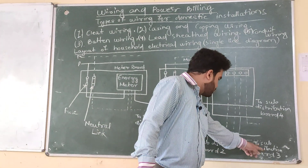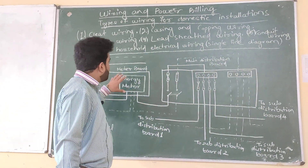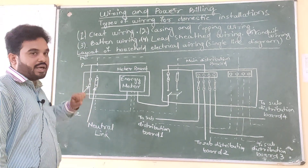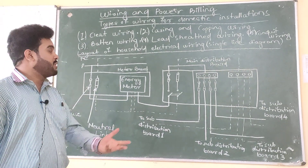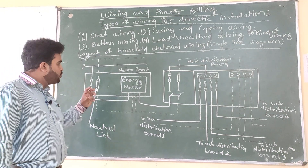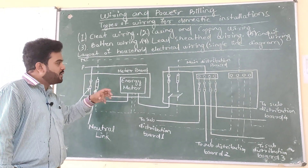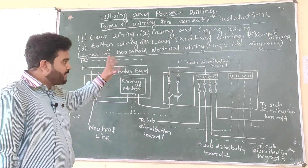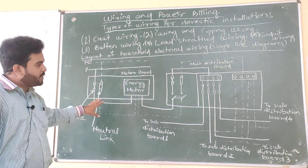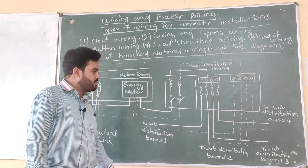Then your sub-distribution board number three and board number four. These are the single line diagram of electrical wiring for home. Whenever we do the experiment, you will actually understand how it is happening. So remember this diagram — it is very very important for your semester exams.